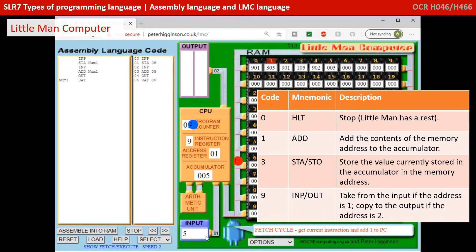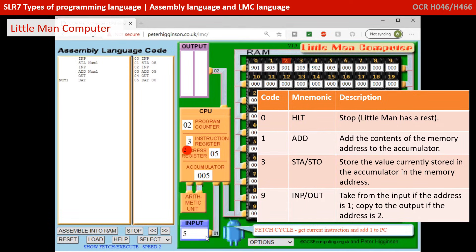We now go fetch the next instruction, incrementing the program counter. So 305 comes back — 3 is going to go into the instruction register and 05. And 3 says store whatever's in the accumulator in memory location 5. There goes the data of 5 to memory address 5, and we've stored it. Now we fetch the third instruction, incrementing the program counter again. We're going to fetch another 901 — that's another input from the user — which goes into the instruction address register, decode it, execute, and now the user types in 4.